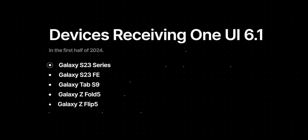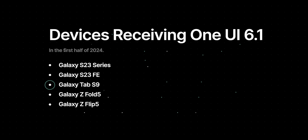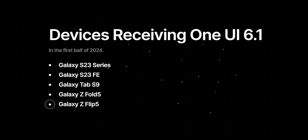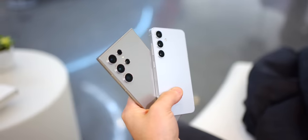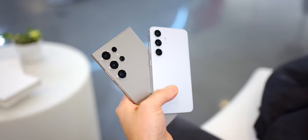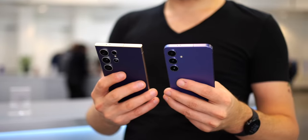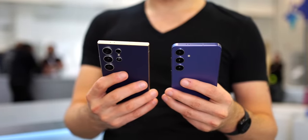The devices Samsung has committed to are the Galaxy S23 series, the Galaxy S23 FE, the Galaxy Tab S9 for tablets, the Galaxy Z Fold 5, and the Galaxy Z Flip 5. Those phones are guaranteed to get One UI 6.1 before the end of the first half of this year. If you don't have one of those devices, One UI 6.1 is probably still coming to you — it's just that Samsung can't promise it'll be in the first half of this year. Thanks so much for hanging out with us. We have a ton more content coming on the Galaxy S24 series and One UI, so stay tuned right here to the Android Authority YouTube channel.